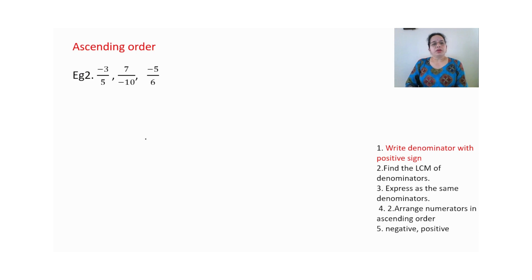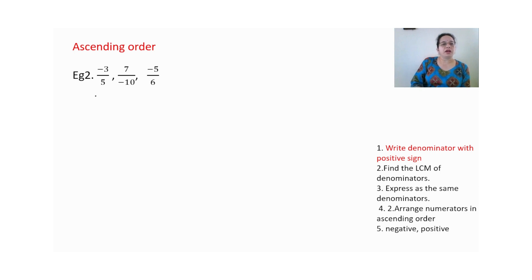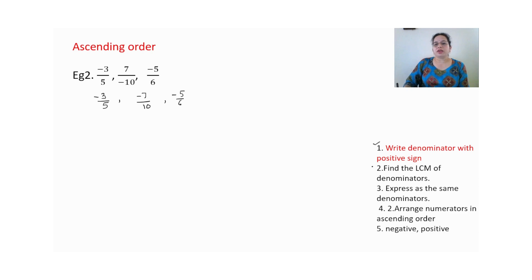Take one more example. First step: check the denominators — one denominator is negative. To make it positive, we move the minus sign to the numerator. So it becomes minus 7 by 10, and minus 5 by 6. Now check denominators — all are different, so we find the LCM.